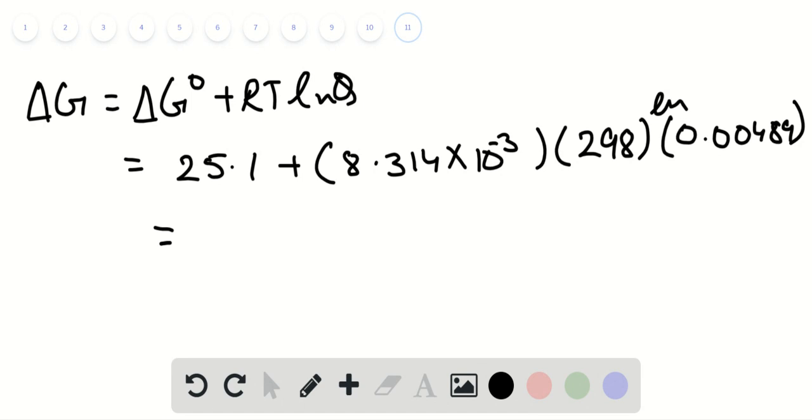The delta G for the reaction in non-standard condition turns out to be 11.9 kJ.